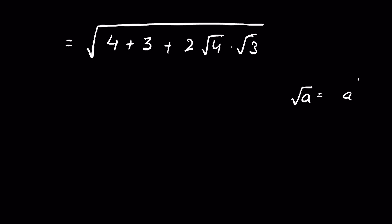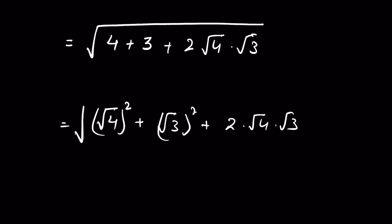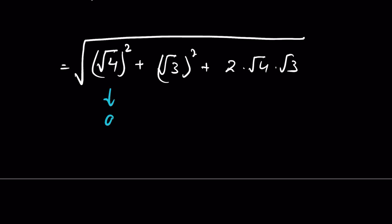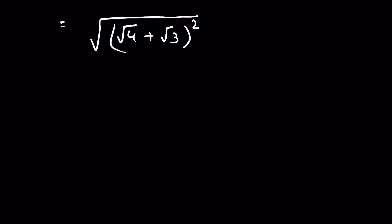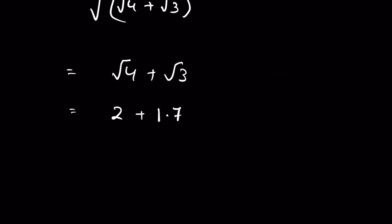When a is under a square root it means a is raised to the power of 1/2; when we square it the exponent is multiplied by 2 and it cancels. So 4 we can write as square root of 4 squared. This gives us square root of 4 squared plus square root of 3 squared plus 2 times square root of 4 times square root of 3, all under a square root. Considering square root of 4 as a and square root of 3 as b, this is in the form a squared plus b squared plus 2ab, which equals a plus b whole squared. So we have square root of 4 plus square root of 3 whole squared under a square root, and the square removes the square root. Square root of 4 is 2, plus square root of 3 is 1.732, giving us 2 plus 1.732 equals 3.732.